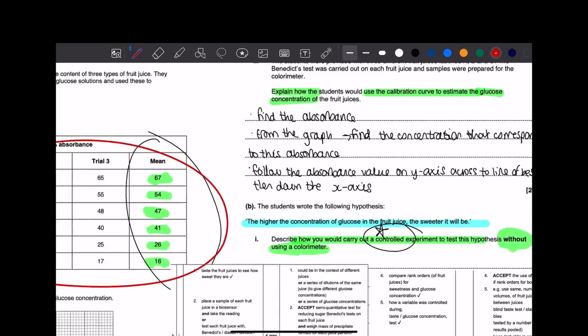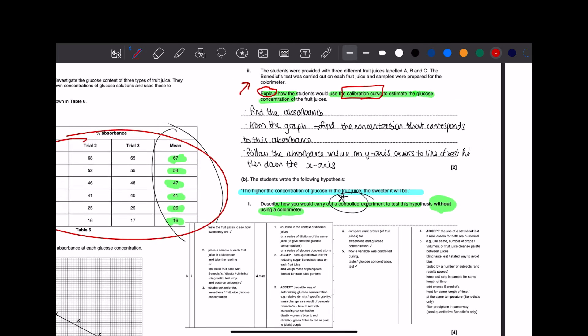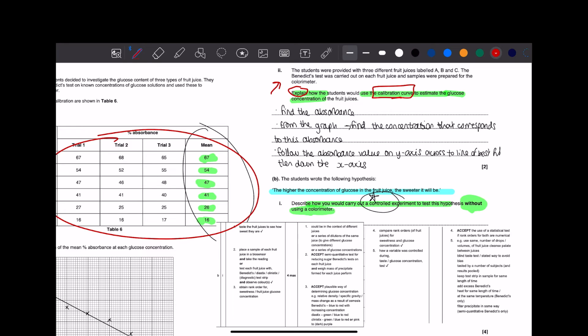Then we have this question: explain how the student would use the calibration curve to estimate the glucose concentration of the fruit juices. The students were provided with three different fruit juices labeled A, B, and C. The Benedict's test was carried out on each fruit juice, and samples were prepared for the colorometer. When it says explain, it means it's a regurgitation of content. You know this stuff. Then there's this calibration curve to estimate glucose concentration.